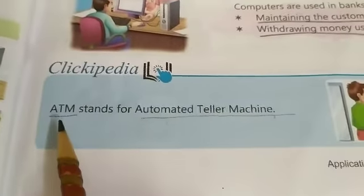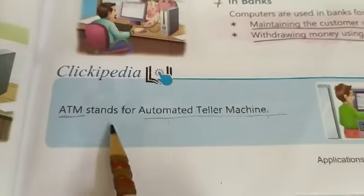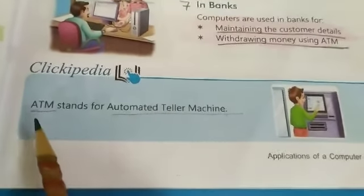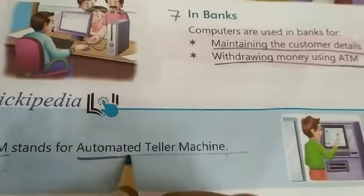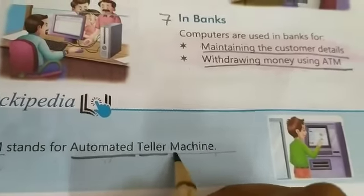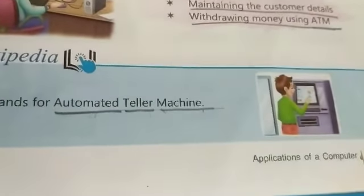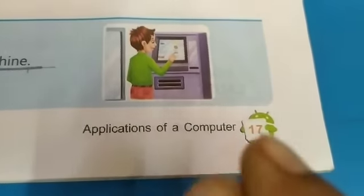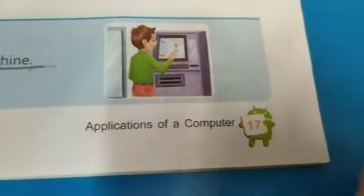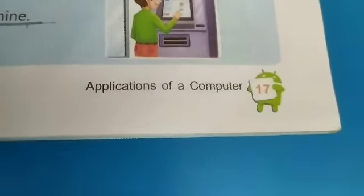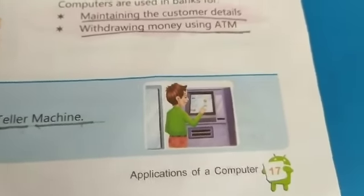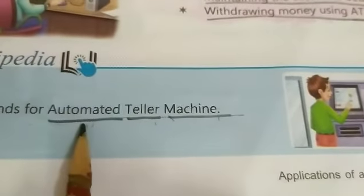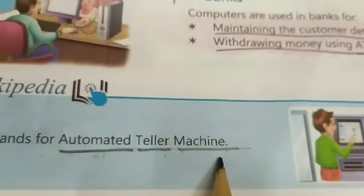Clicky pedia mein dekhen kya hai — ATM. ATM stands for Automated Teller Machine. ATM ka full form kya hai? Automated Teller Machine. ATM kya hai? Ek automatic machine — jis pe aap click karte jaate ho aur chizein hoti jaati hain, phir aapko paisa mil jata hai.